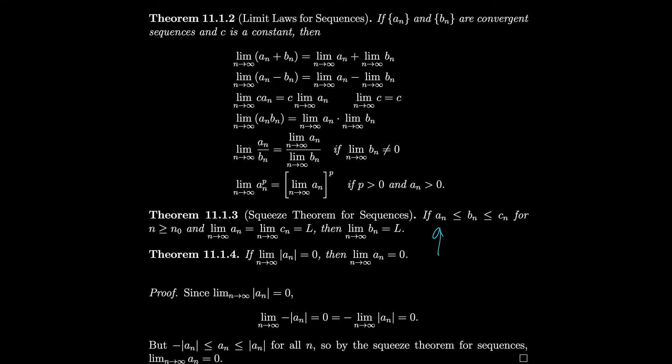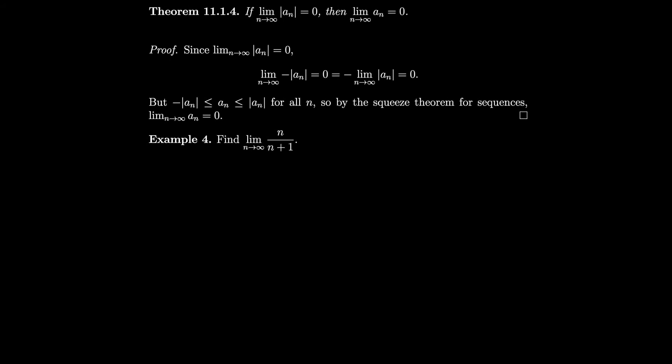Next, a theorem more unique to sequences: if lim |an| = 0, then lim an = 0. We use this frequently. Proof: since lim |an| = 0, we also have lim (−|an|) = 0. Since −|an| ≤ an ≤ |an| and both outer limits are 0, the squeeze theorem forces lim an = 0.